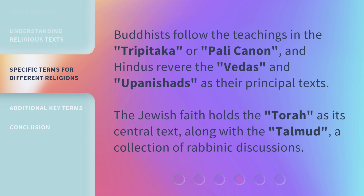Buddhists follow the teachings in the Tripitaka, or Pali canon, and Hindus revere the Vedas and Upanishads as their principal texts. The Jewish faith holds the Torah as its central text, along with the Talmud, a collection of rabbinic discussions.